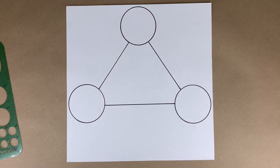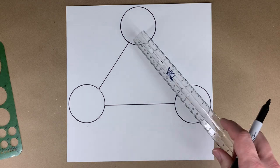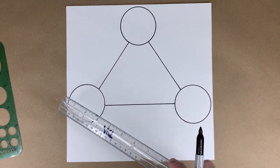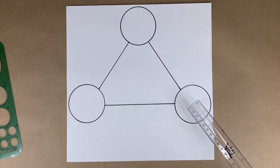These are going to be the three primary colors. We're going to put yellow at the top, red on the left, and blue on the right.